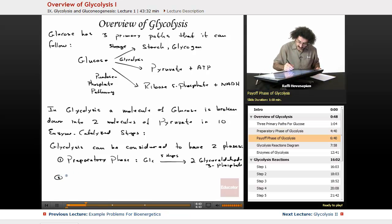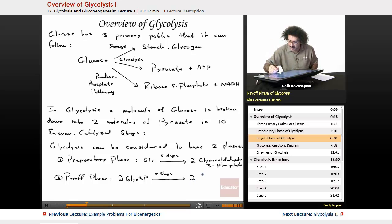Now, the second phase is called the payoff phase. And this is where these two molecules of glyceraldehyde-3-phosphate, in another five steps, are converted to two molecules of pyruvate. So you see the little bit of symmetry here that we've divided it into. The preparatory or investment phase is where ATP is used to actually invest a little bit more energy into the glucose molecule to actually prime it, to prepare it for the other reactions. And the payoff phase comes because during that process, ATP is actually produced.